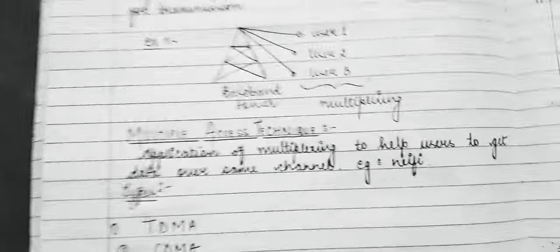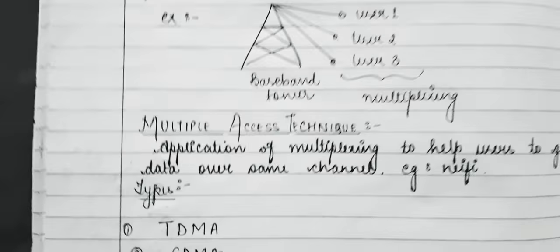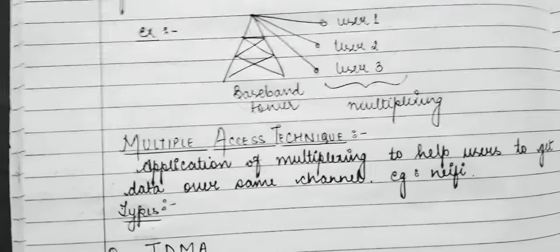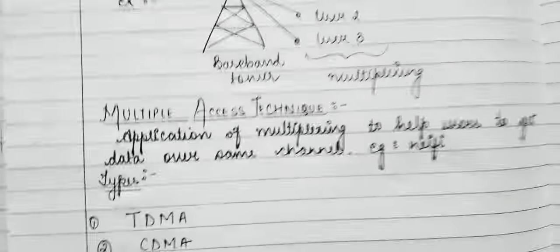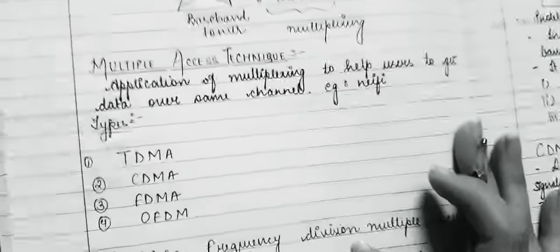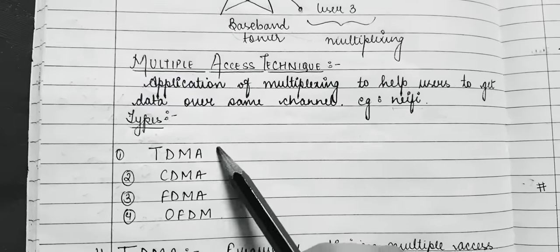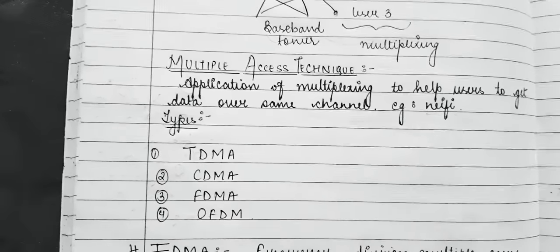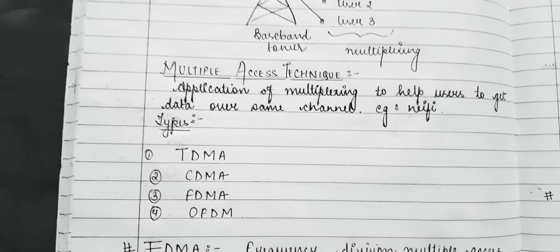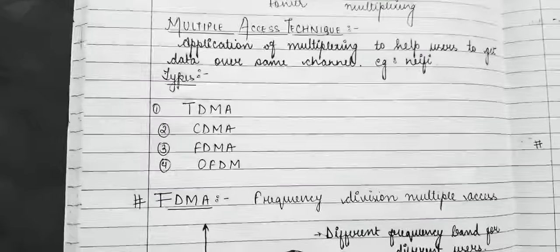Now if we talk about the multiple access technique, the application of multiplexing is to help users get data over the same channel. For example, we can say WiFi — when we use WiFi, multiple connections can be done. The types of multiplexing techniques are: TDMA (Time Division Multiple Access), CDMA (Code Division Multiple Access), FDMA (Frequency Division Multiple Access), and OFDM (Orthogonal Frequency Division Multiple Access).